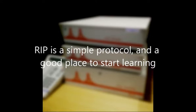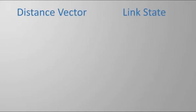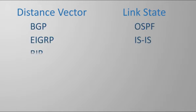Before we dive into RIP configuration, let's talk about dynamic routing protocols in general. We can break routing protocols into two categories: distance vector and link state. These are two entirely different approaches to how a routing protocol works.